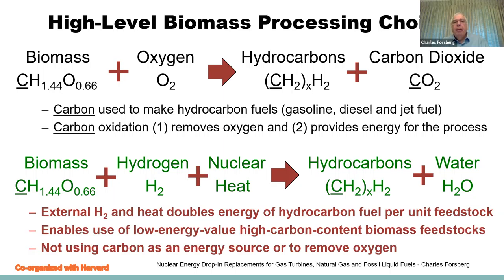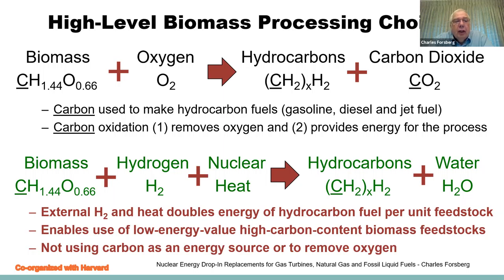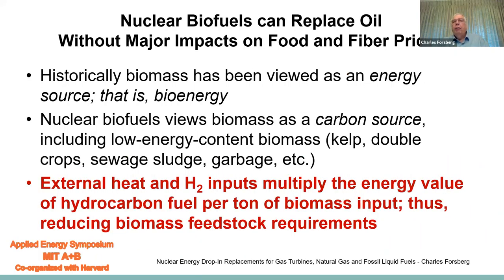In terms of biomass processing, we have two choices. The existing choice: we start with biomass, add oxygen to produce hydrocarbons and carbon dioxide, and some carbon is oxidized to remove oxygen from the biomass and provide energy for the process. What we propose: start with biomass and massive quantities of hydrogen plus massive quantities of nuclear heat to produce hydrocarbons and water. External hydrogen and heat doubles the energy of hydrocarbon fuel per unit feedstock and enables the use of low-value, high-carbon content biomass feedstocks. We do not use carbon as an energy source or as a way to remove oxygen from the biomass.